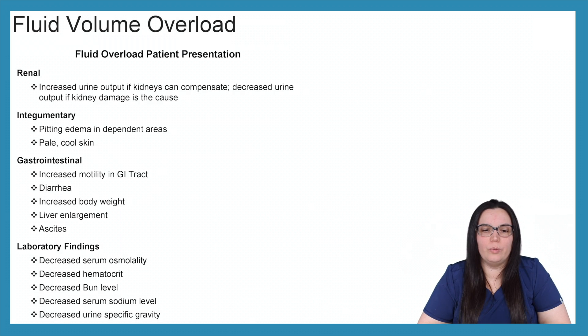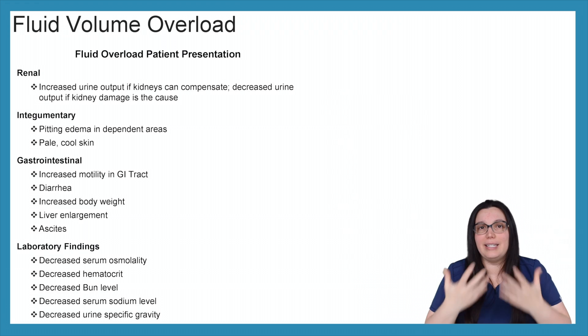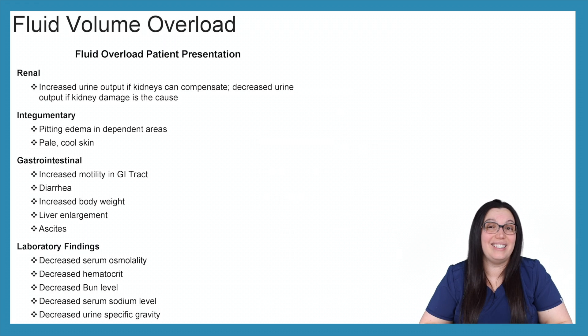When it comes to our renal, we're going to have an increased urinary output if the kidneys are able to compensate. If the kidneys cannot compensate, then you're going to start to see a decrease in urinary output. Integumentary system, we're going to have pitting edema in a lot of our dependent areas as well as that pale, cool skin.